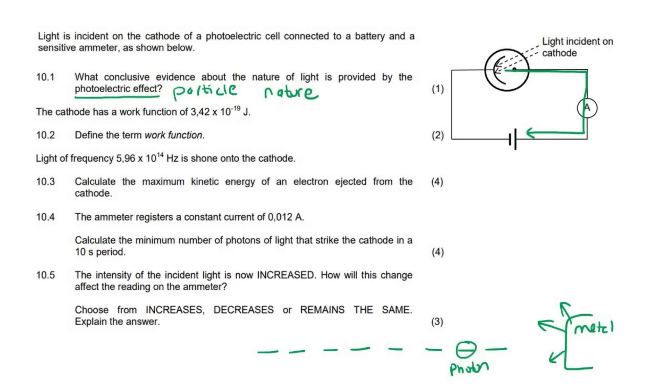The cathode has a work function. Remember the work function? I have explained this in detail in the previous lessons, so we should all know what work function is. It's the amount of energy that you need to remove an electron. They're asking us to define it here. It's the minimum energy needed to eject electrons from the surface of a metal.